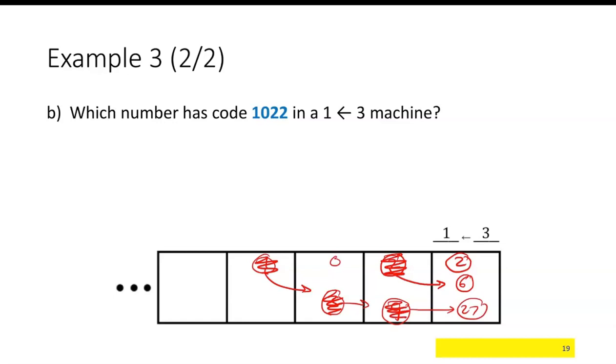And then, if I add these, 27 plus 6 plus 2, that comes out to be 35. So 1022 is the code for the number 35.